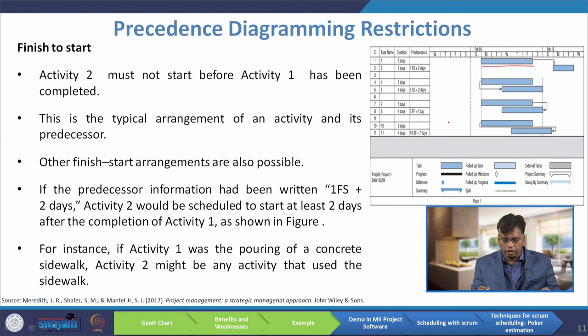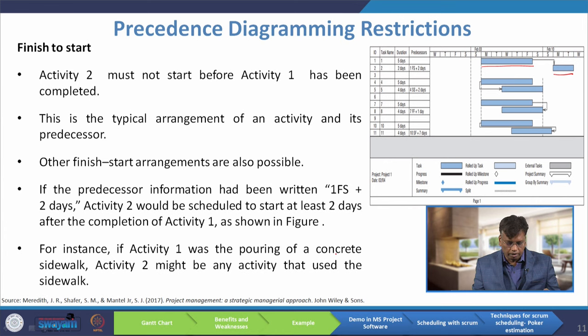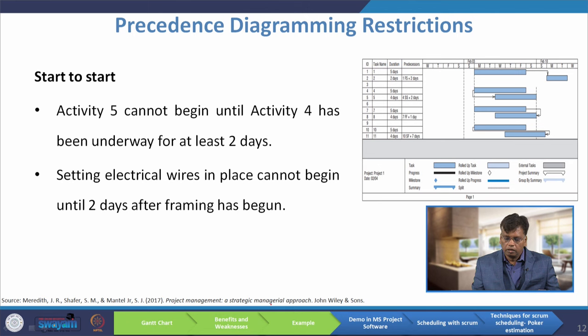Other finish-to-start arrangements are also possible. If the predecessor information is written as '1 FS + 2 days,' activity two would be scheduled to start at least two days after the completion of activity one. For instance, if activity one was the pouring of a concrete sidewalk, activity two might be any activity that uses the sidewalk, because there is time required for the concrete to set — that is why the two days.